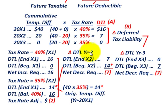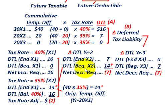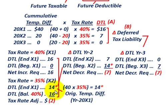For year X2's change in deferred tax liability, we use the recalculated $14,000 as our beginning balance at the 35% rate. The end-of-year X2 deferred tax liability was calculated to be $7,000. So we have a beginning balance of $14,000 and an ending balance of $7,000, giving us a net decrease required of $7,000.